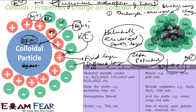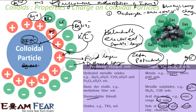If you look at some examples: positively charged sols include basic dye stuff, hemoglobin, and oxides. Negatively charged sols include metals like copper, silver, and gold sols, or AS2S3 — metallic sulfides — are also negatively charged. Eosine, red sols, gum, starch, and gelatin are all negatively charged sols. So negative sols means the particles carry a negative charge, and positive sols means the particles carry a positive charge.